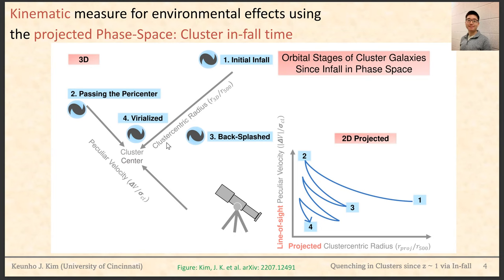The phase-space diagram has two axes. One is cluster-centric radius, and the other axis is the peculiar velocity motion of cluster galaxies, which can be obtained from spectroscopic observations. By using these two parameters, we can trace the orbital motion of infalling cluster galaxies from initial infall all the way through the passage of the periphery, center, first pass, and virialization. If we observe these orbital trajectories through a telescope, we obtain the 2D projected phase-space diagram.